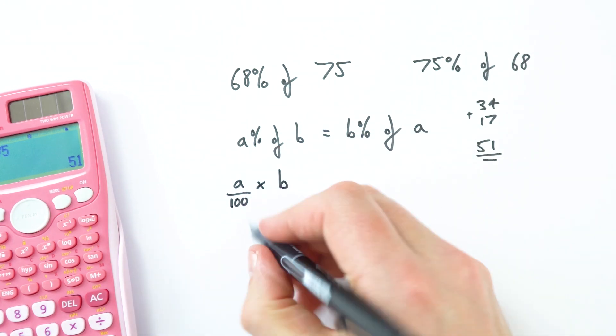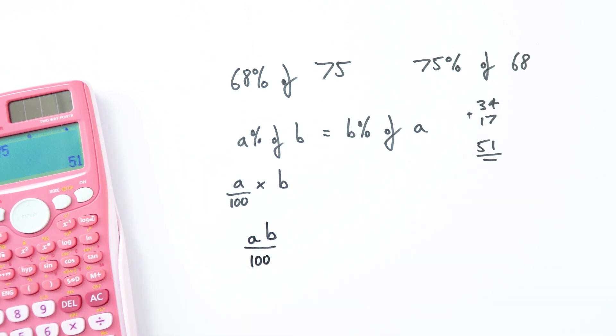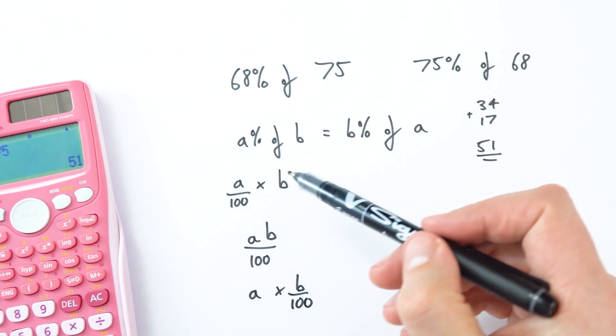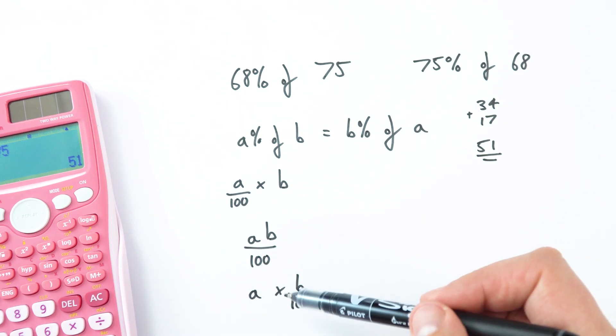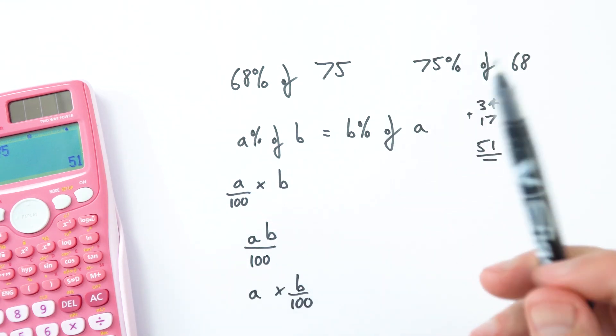Now this is then the same as A times B divided by 100, and we can also write this as A times B over 100. So what we have here is A percent of B, and what we have here is just B percent of A, and we can see that the two things are indeed the same.